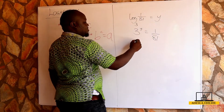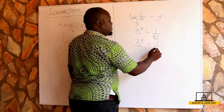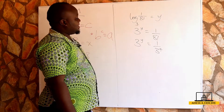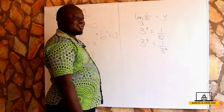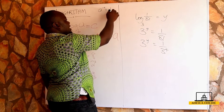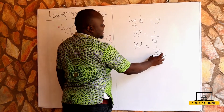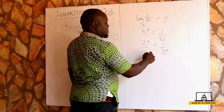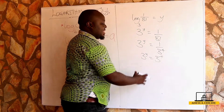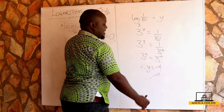So 3^y = 1 over 3^4. As we learned in indices, using the inverse rule: a^(−n) = 1 over a^n. The right-hand side becomes 3^(−4). So I have 3^y = 3^(−4); the bases are the same, therefore y is equal to negative 4. That is the value of y.